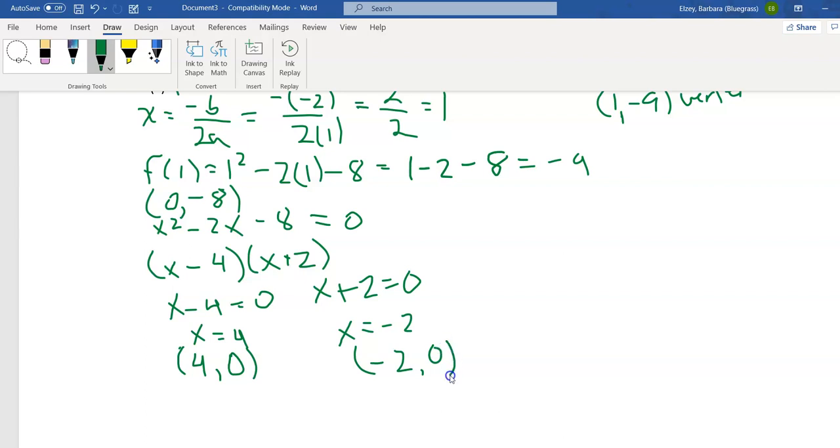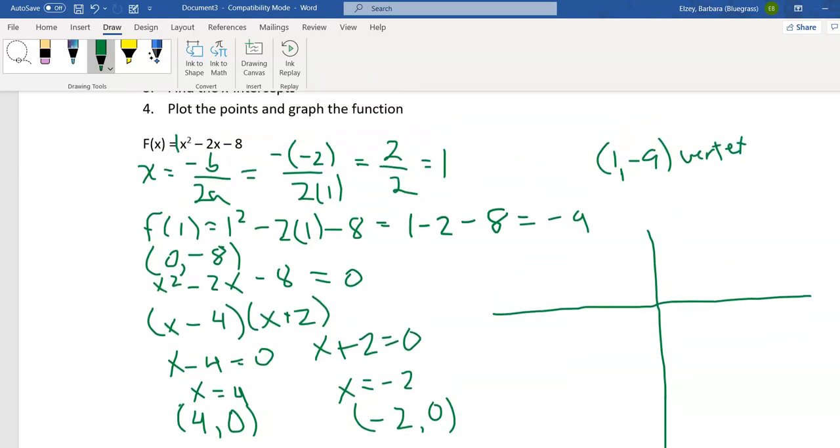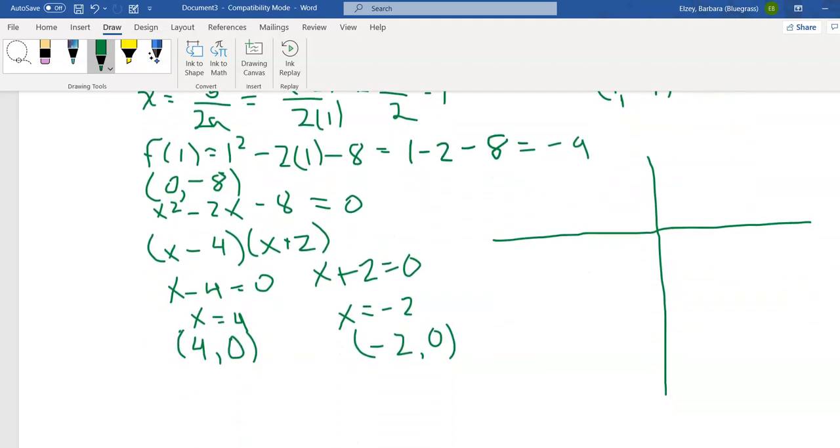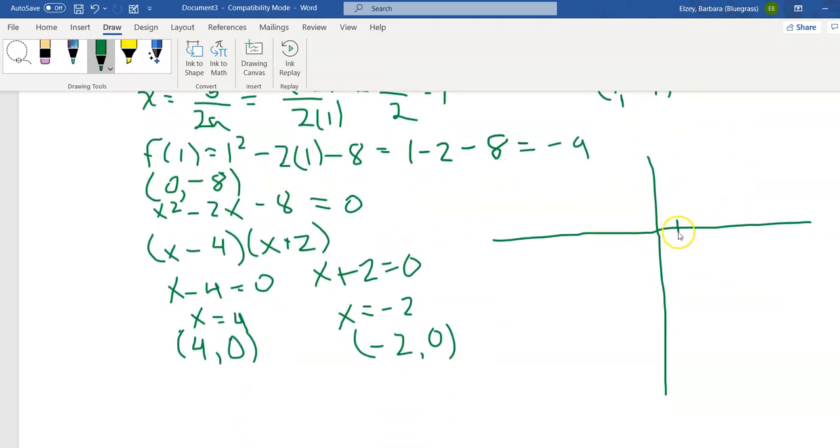Now that we've got everything, we're going to go to step 4, which is to graph this thing. And I will draw this as straight as I can. And let's go back and let's plot our vertex first. It's at 1 negative 9. So 1, 1, 2, 3, 4, 5, 6, 7, 8, 9. So there it is. There's my vertex.